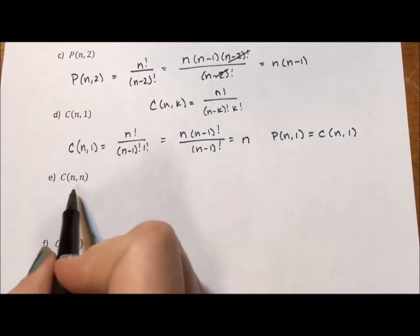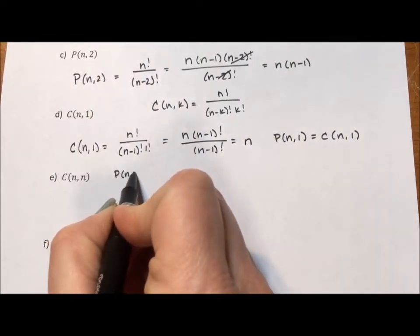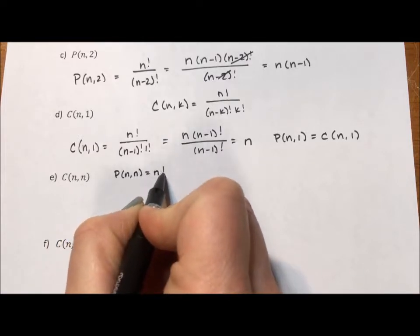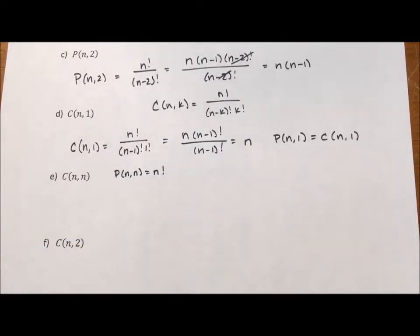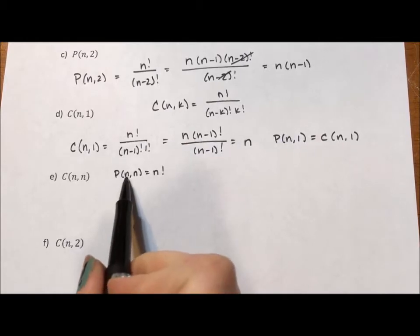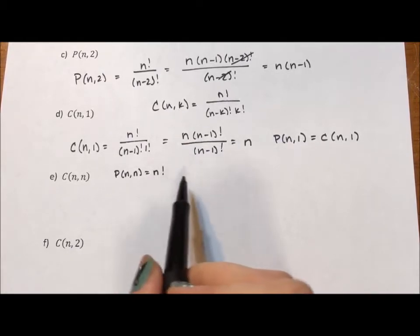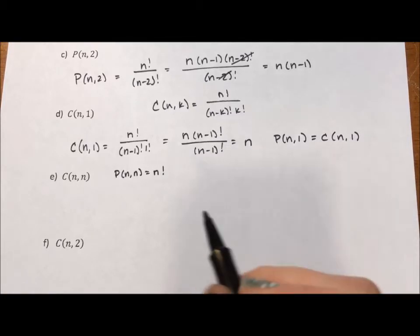If you remember, above, we had the permutation of n items taken n at a time was n factorial. It was as big as it got because we were doing all n items. If we had that 10 again, it would be 10 times 9 times 8 times 7 times 6, 5, 4, 3, 2, 1. All of them.